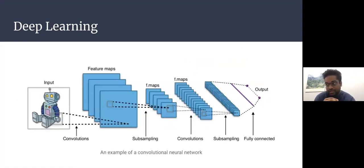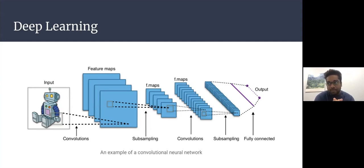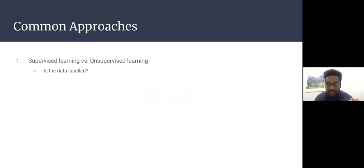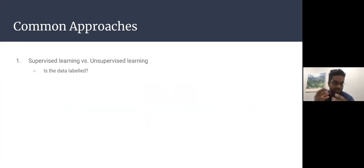A convolutional neural network is a type of artificial neural network usually used to analyze visual imagery. Starting with a randomly initialized network, as we see more and more input data, we train the neural network so that neurons are updated throughout training, so that for a given image the network predicts the correct label. Within this realm, there is supervised and unsupervised learning — if the data is labeled we use supervised learning; if not, we can use clustering methods to find interesting patterns.